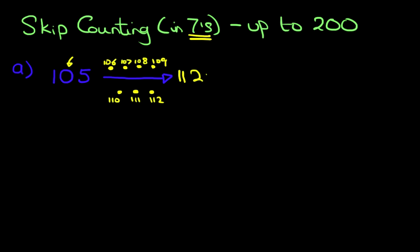Let me just rewrite that again. 112. So the number after 105 if we are counting in sevens is 112.